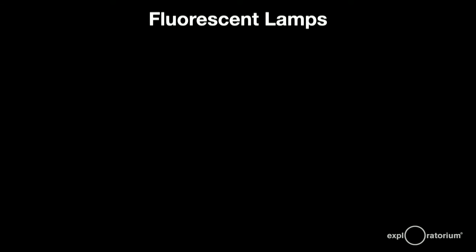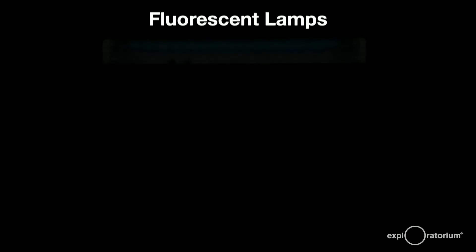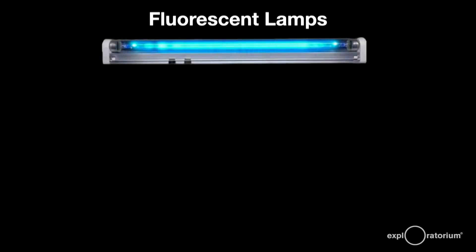Now fluorescent lamps also depend on adding colors. If you remove the powder from the inside of a fluorescent tube so the glass is clear, you'll see the baby blue glowing colors of mercury gas.